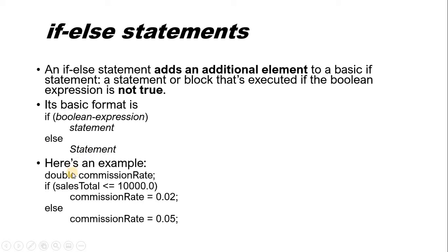For example, with sales total: if sales total is less than or equal to 10,000, this condition is true, then the commission rate will be 0.02. If this condition is false, then the else part sets the commission rate to 0.05.